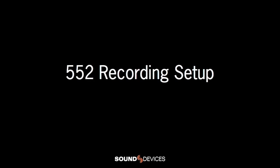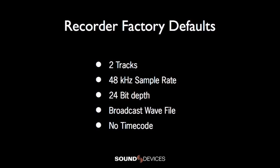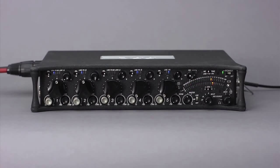The integrated two-track recorder in the 552 makes backup recording simple. From the factory, the 552 is set to record the left-right outputs to two-channel 48k 24-bit wave files without timecode. If your recordings require different parameters, all recorder settings can be changed in the setup menu.